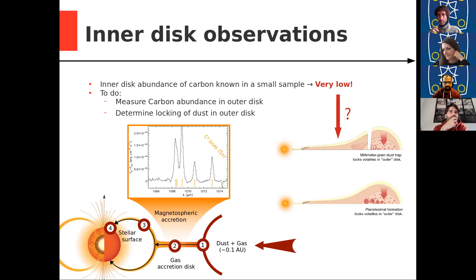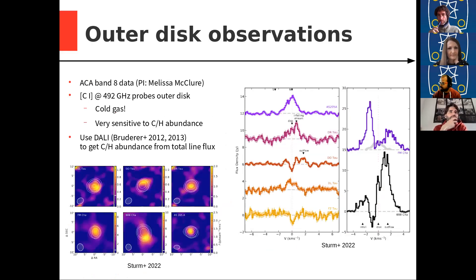So for that reason, we conducted a small study, seven sources in Taurus. So this is using the ACA band 8. And we target the neutral carbon line at about 500 gigahertz. And we trace the really cold gas. So this is basically the bulk of the disk mass. And this line is very sensitive to the carbon abundance in the planetary disk. So you can see that most of the disks are actually unresolved. There is some substructure to be seen due to inflow and envelope material. And you can see a lot of substructure in the spectrum as well.